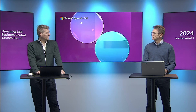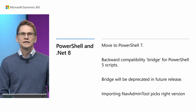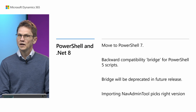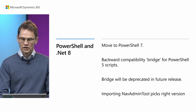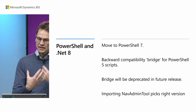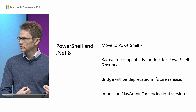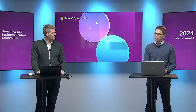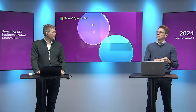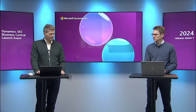We'll deprecate PowerShell 5 within the next few years. To summarize: go ahead and move to PowerShell 7. We do have a backward compatibility bridge which will call into the PowerShell 7 commandlets, but it will be deprecated. If you import the nav admin tool, it will automatically pick the right version — checking whether you're running PowerShell 7 or PowerShell 5. Your scripts should still run. If you have imported the old assemblies directly rather than through the nav admin tool, you may have to make minor changes.